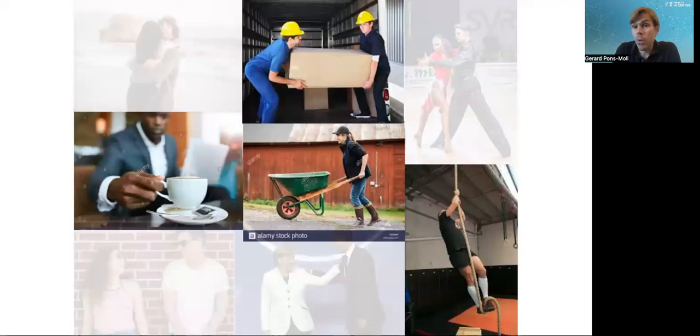They interact with the world to change it, for example, to move and grab objects, to climb. To become full partners with humans, computers need to be able to see us. By see us, we mean understand our interactions, our intentions, our gestures, our body language, and our interactions with the world.